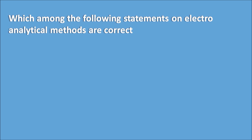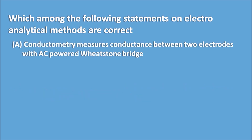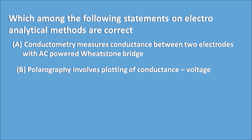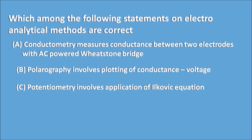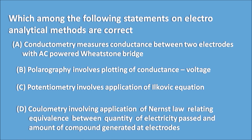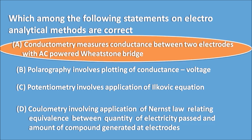Fourth question: Which among the following statements on electroanalytical methods are correct? a) Conductometry measures the conductance between two electrodes with an AC-powered Wheatstone bridge. b) Polarography involves plotting of conductance versus voltage. c) Potentiometry involves the application of the Ilkovic equation. d) Coulometry involves the application of Nernst's law relating the quantity of electricity passed to the amount of compound generated at electrodes. The right answer is statement a) — conductometry measures conductance between two electrodes with an AC-powered Wheatstone bridge.